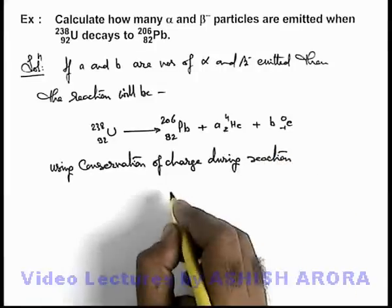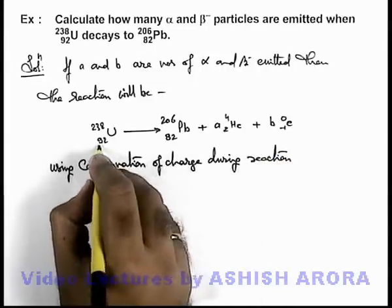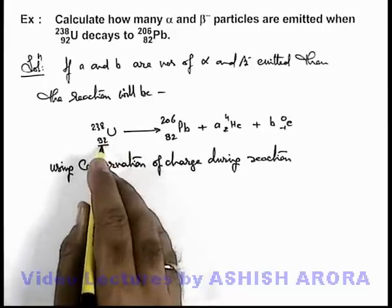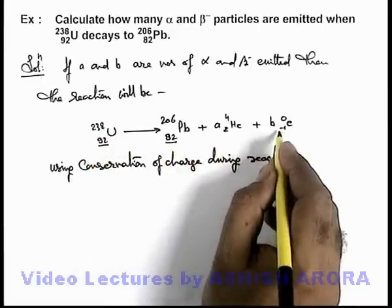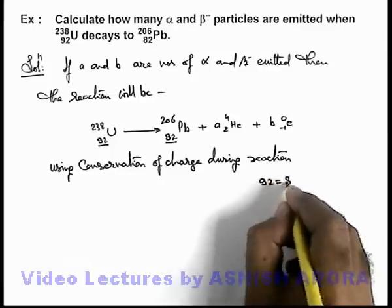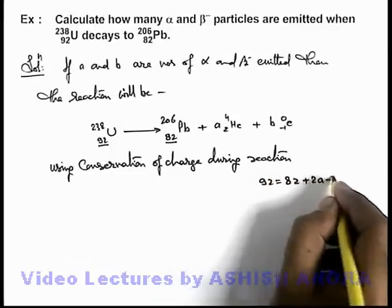Charge before decay was 92 and finally it is 82 plus 2a minus b, so here we can write 92 equals 82 plus 2a minus b.